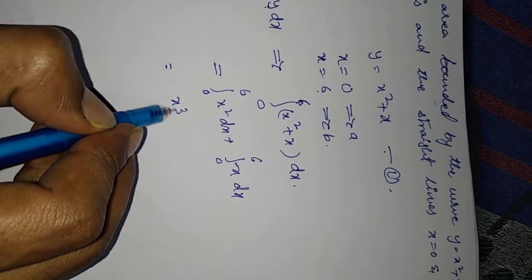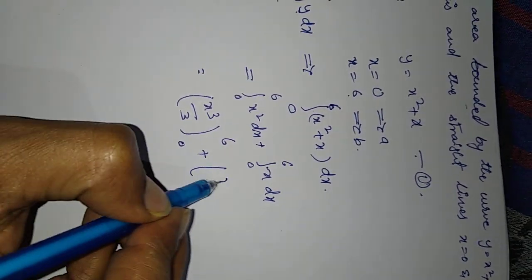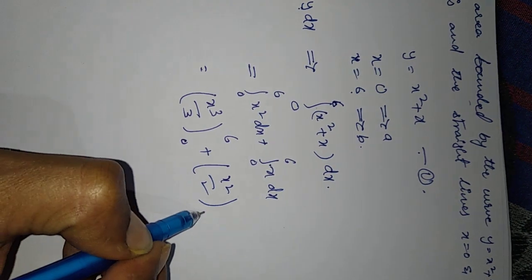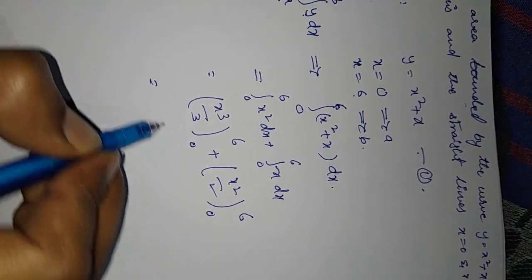That equals x cubed by 3 with limits 0 to 6, plus x squared by 2 with limits 0 to 6. Then substitute upper limit minus lower limit.